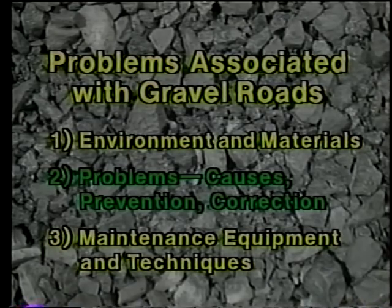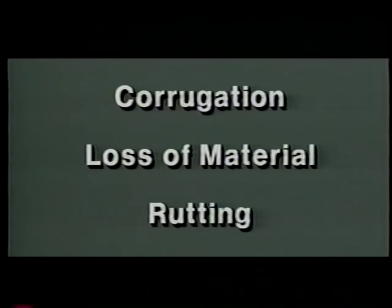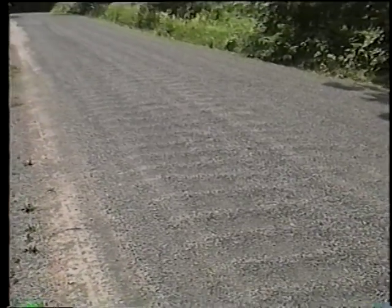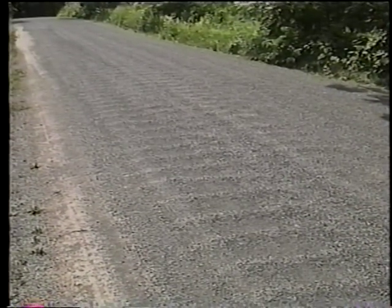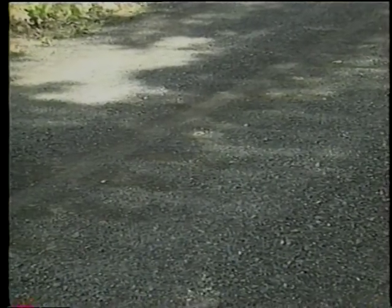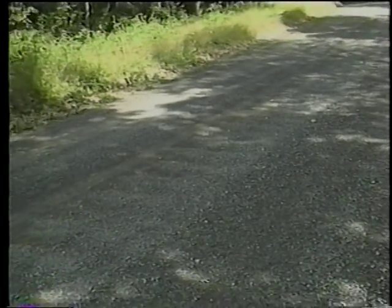Here in part two we'll look at the three most common problems of gravel roads, including their causes, prevention, and correction. First corrugation, then loss of material, and finally rutting. Corrugations are the transverse ridges that usually extend across the full width of the travel portion of the road, running perpendicular to the direction of traffic. In many parts of the country this distress is also called washboarding.